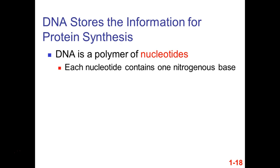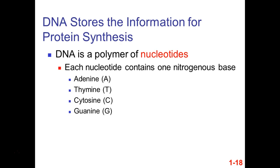Each nucleotide contains a nitrogenous base — either adenine (A), thymine (T), cytosine (C), or guanine (G). You're in genetics class now, so you need to move past just the letters — you actually need to know what A stands for: adenine. T stands for thymine, C for cytosine, G for guanine.